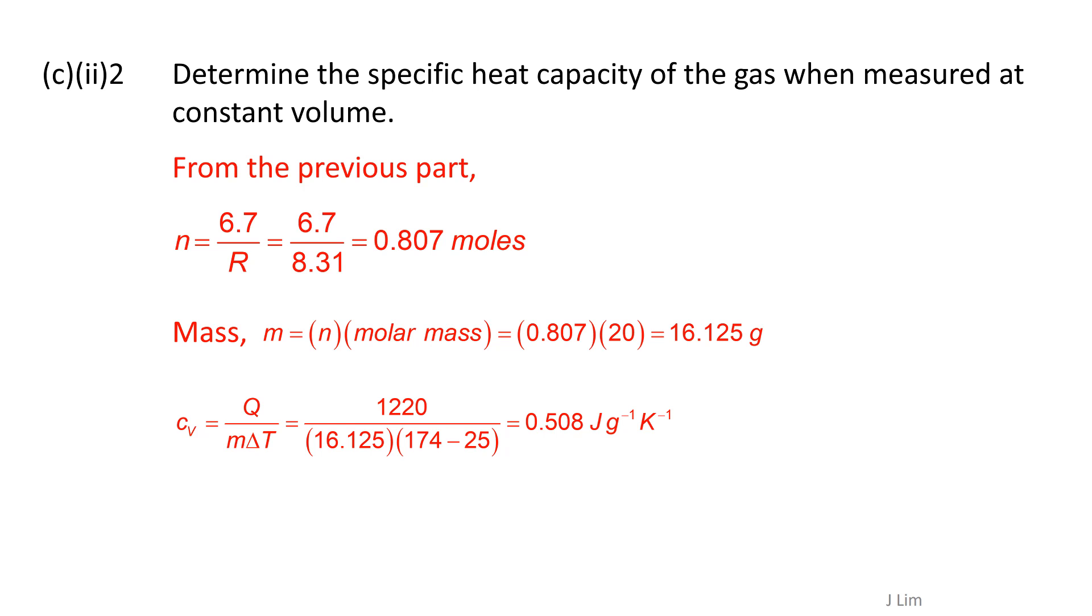From the previous part, we can get the number of moles equal to 0.807 moles. Mass is equal to the number of moles multiplied by molar mass and we get 16.125 grams. Therefore, the specific capacity of the gas when measured at constant volume is 0.508 Joules per gram per Kelvin.